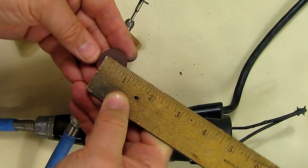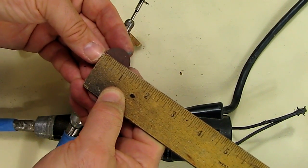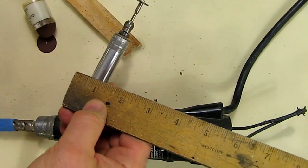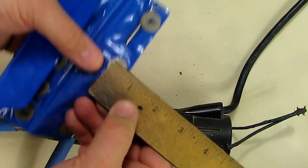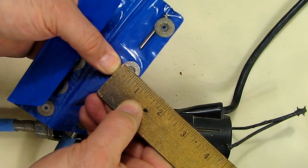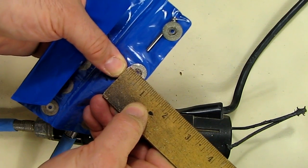The Dremel looks like it's about 7/8 of an inch, and this tool is just a little over half an inch in diameter.